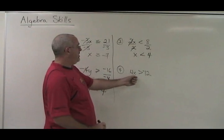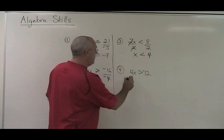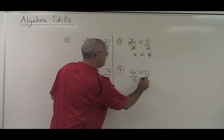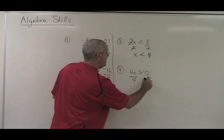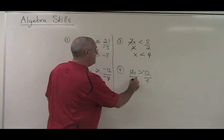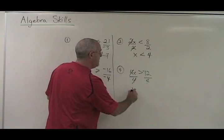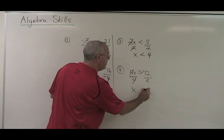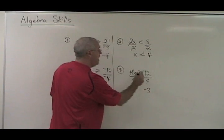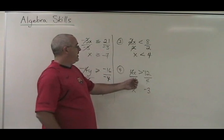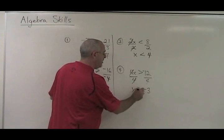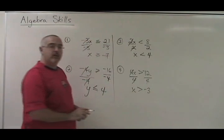Here, my x is being multiplied by a 4. I divide both sides by 4. The 4 is cancelled. x is isolated. Negative 12 divided by 4 is negative 3. But because I divided both sides by a positive number, I keep the symbol the way it's facing.